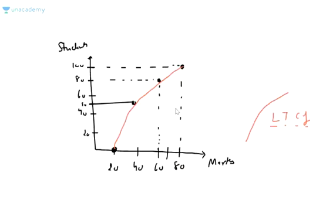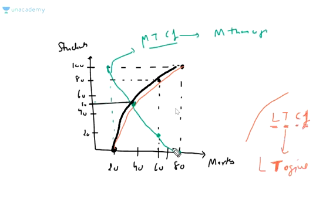Less than cumulative frequency graph will become less than, then more than graph will become more than.